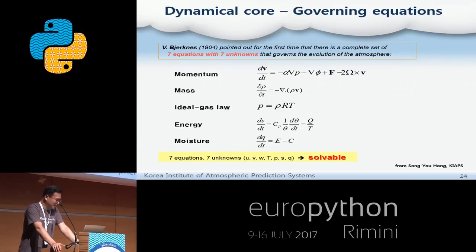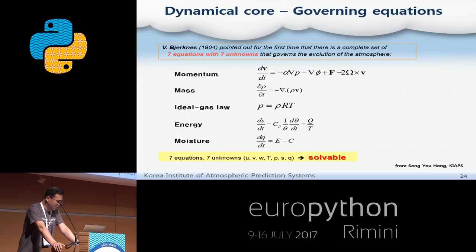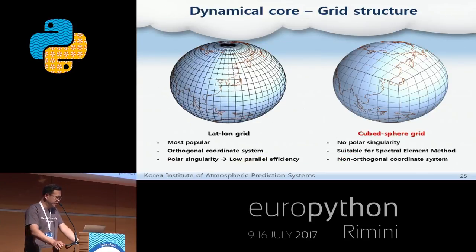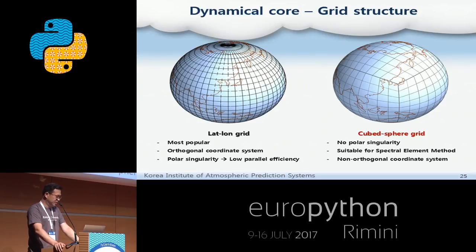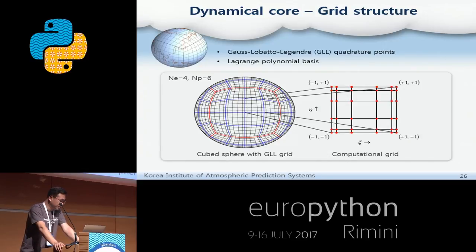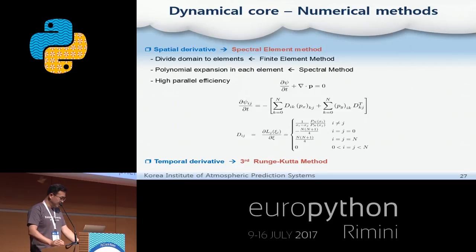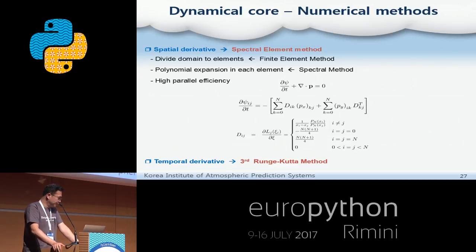The global equations of the dynamical core consist of the following conservation equations. Prognostic variables in these equations are horizontal and vertical wind speed, temperature, pressure, entropy, and water vapors. The lat-lon grid had been widely used as a grid on the Earth. However, the higher the grid resolution, the lower the parallel efficiency, so we used the cubed-sphere grid. The cubed-sphere grid consists of rectangular elements and their internal Gauss quadrature points. We used the spectral element method for spatial derivatives and the third-order Runge-Kutta method for time derivatives. The spectral element method has excellent parallel scalability.